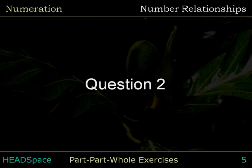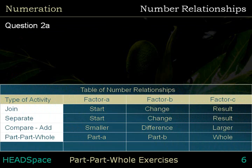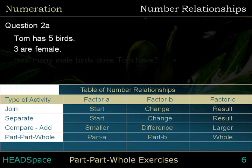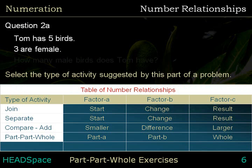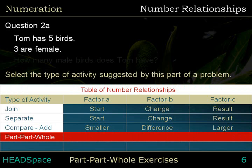Question 2. Here is a partial problem: Tom has 5 birds. 3 are female. Table of Number Relationships — select the type of activity suggested by this part of a problem. The answer is: Part Part Whole. In a Part Part Whole problem, Part A and Part B make the whole.